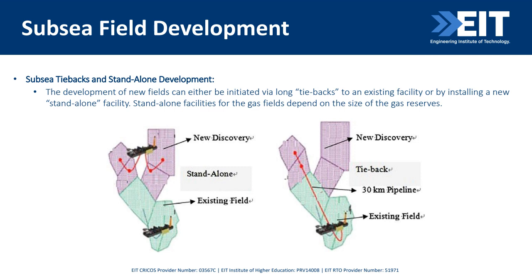For standalone versus tieback development: looking at two field examples — in the standalone case, a new field discovery builds its own independent production system rather than connecting to the existing nearby platform. In the tieback case, instead of getting a new FPSO or platform, a 30-kilometer pipeline connects the new field back to the existing platform. That is the distinction between standalone subsea development and tieback development.